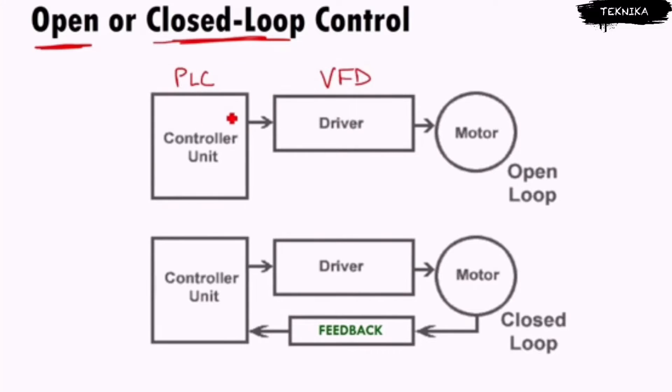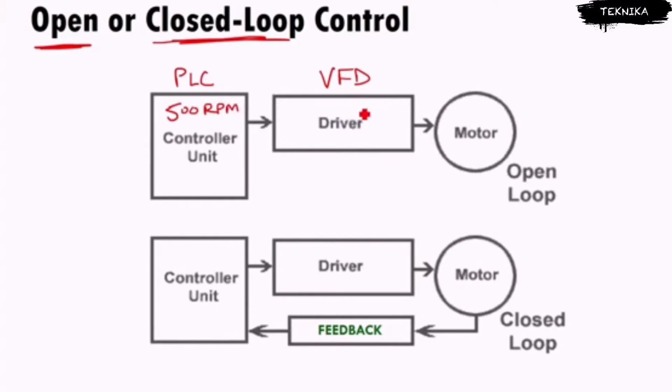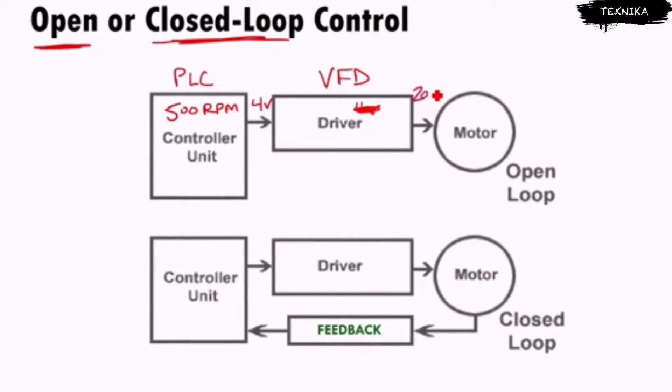The PLC says I want the motor to go 500 RPM. The VFD says okay, I need to send a 4 volt signal to the VFD, and then the VFD says I need a 20 Hertz signal to the motor. At some point, maybe that's 500 RPM.